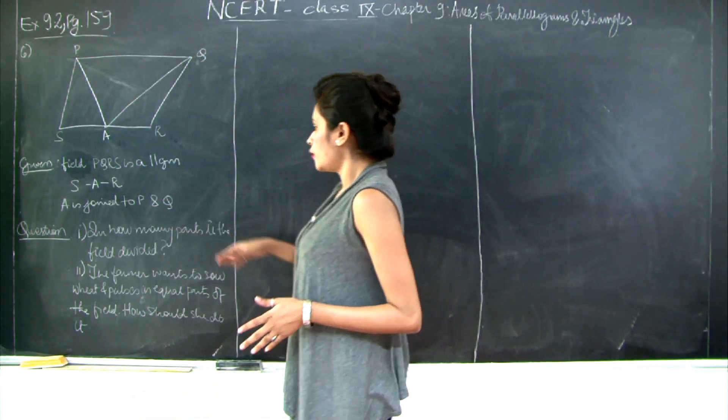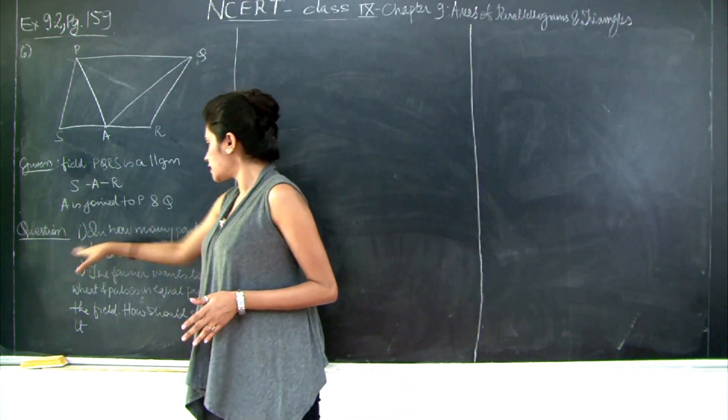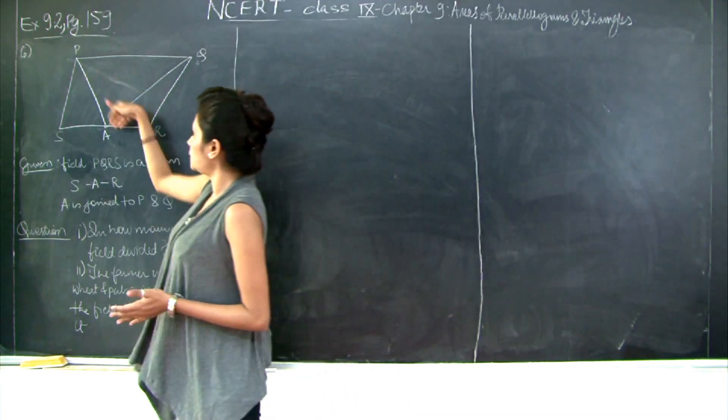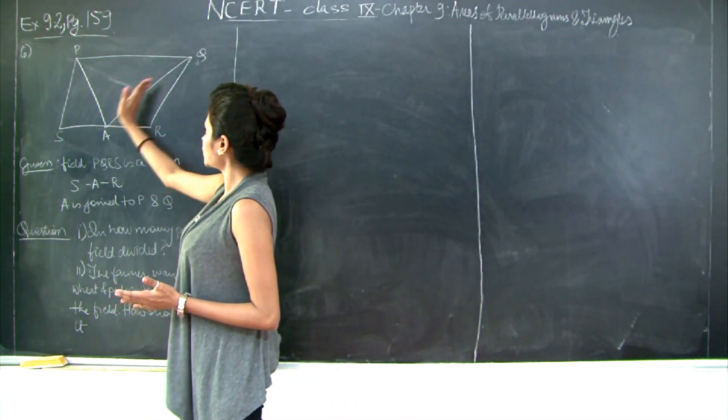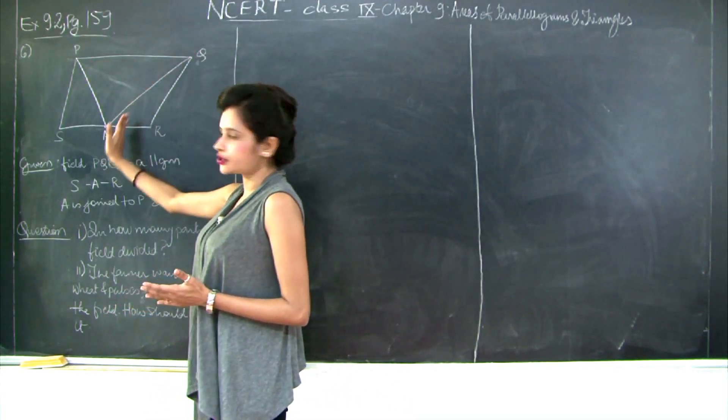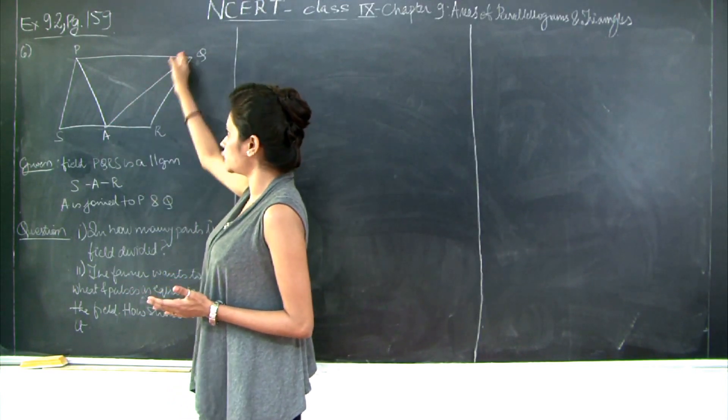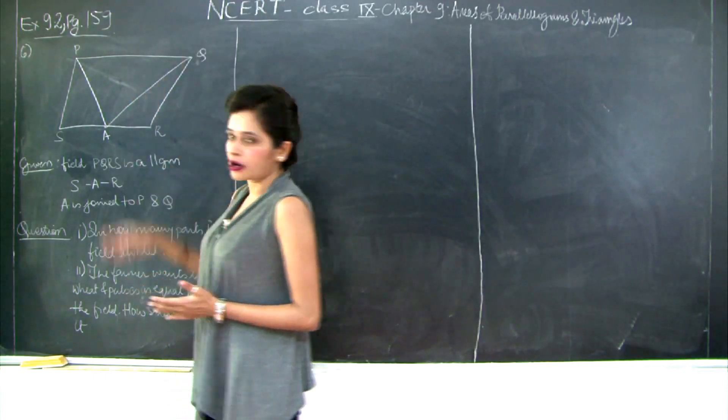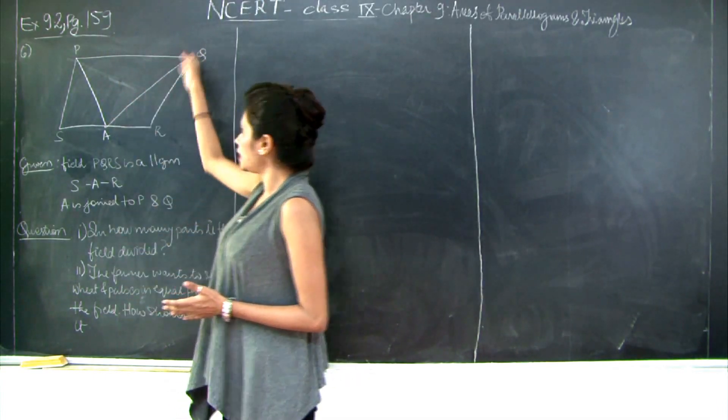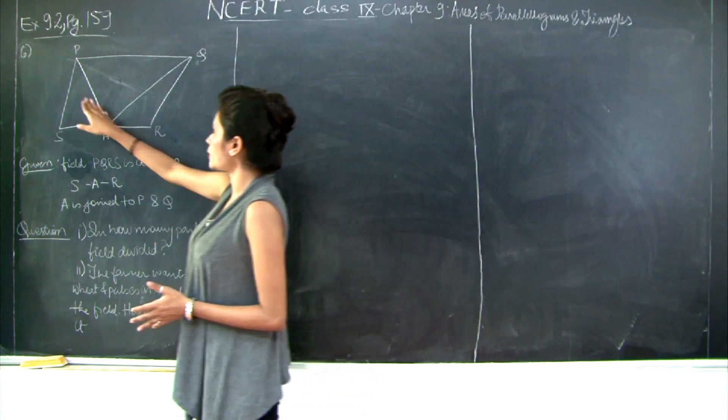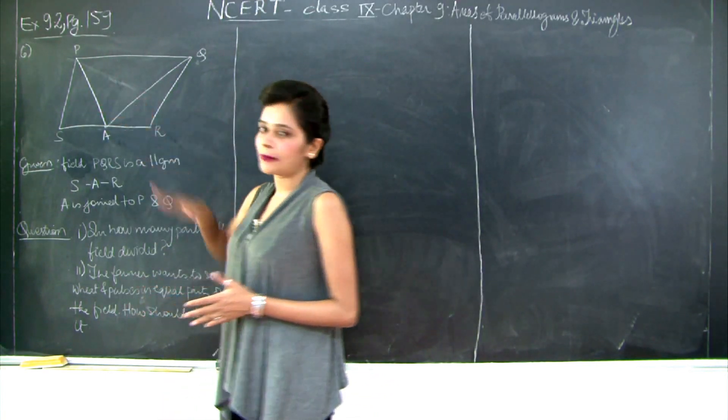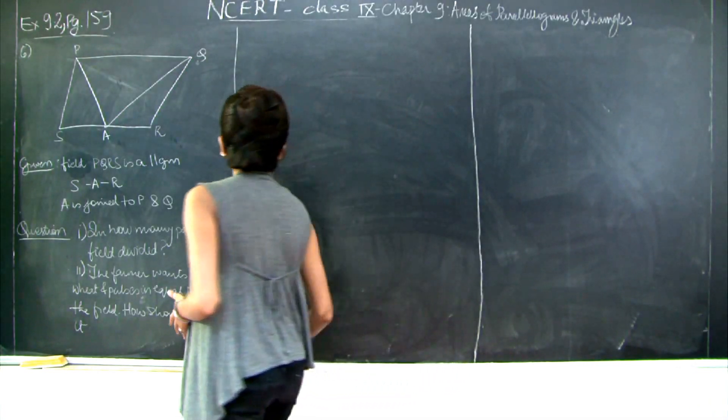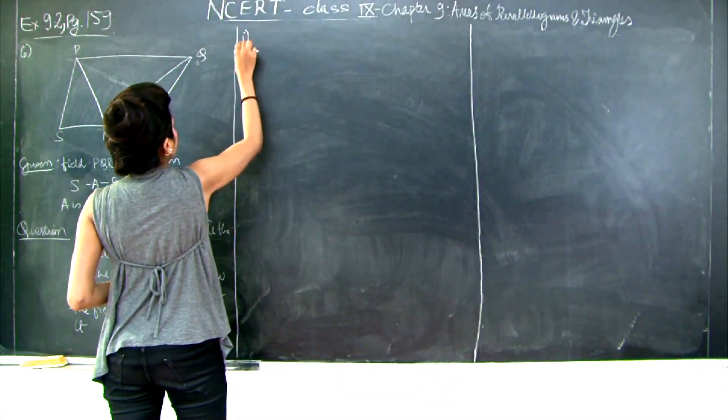Now the question is in how many parts is the field divided? It's obvious - AP is dividing the field. If you do not consider this section AQ, and just take AP, it is dividing it into two parts. But I have another boundary or line or section out here, so my field is divided into three parts.